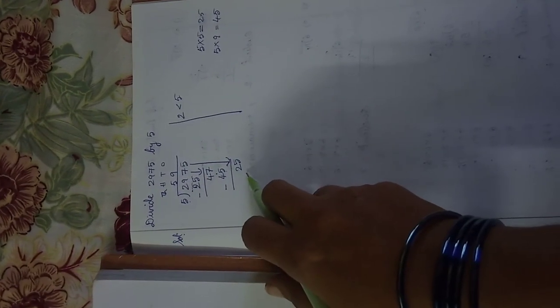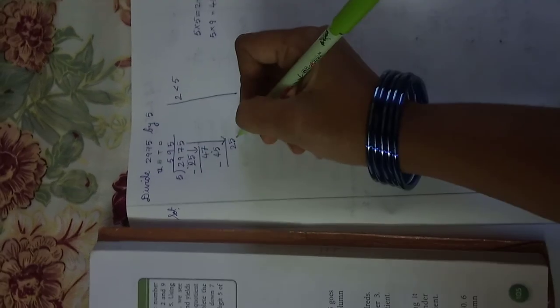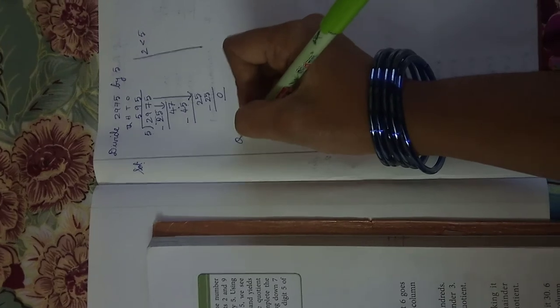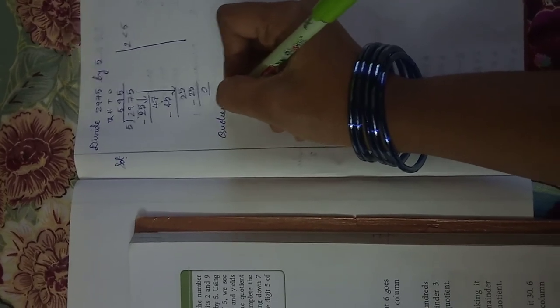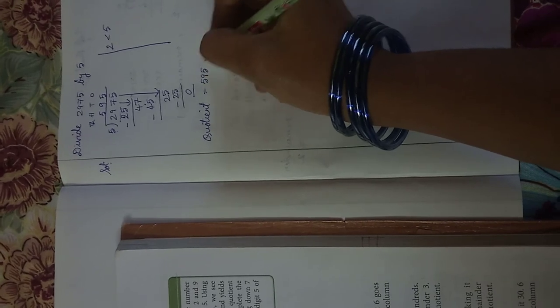In the 5 table again, 5 fives are 25. So what is the quotient? The quotient is 595 and the remainder is 0.